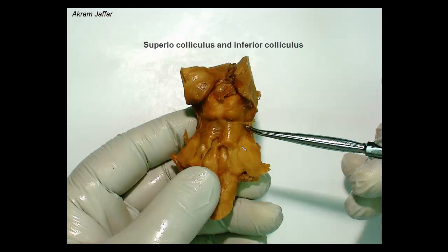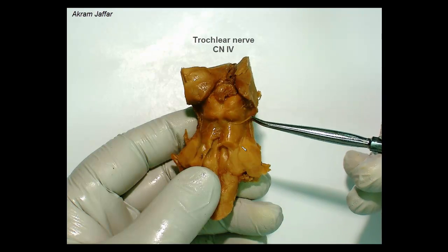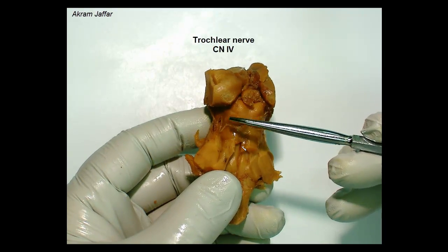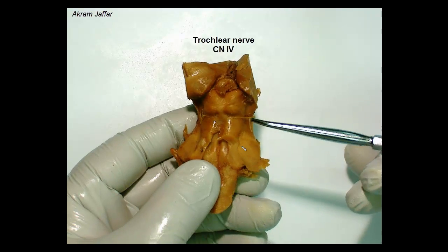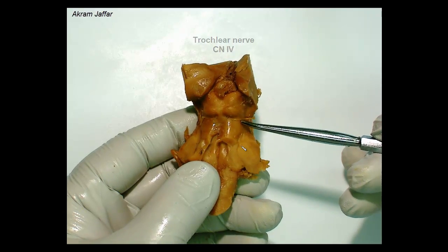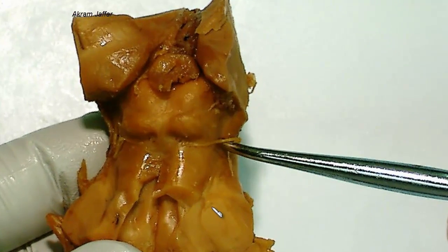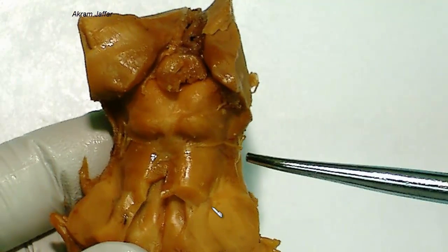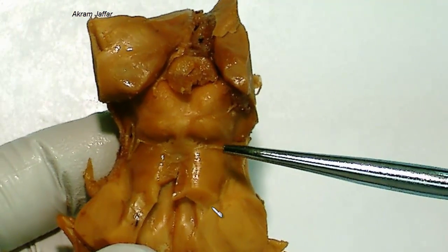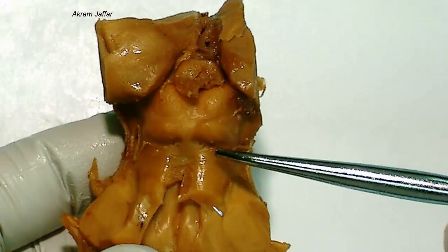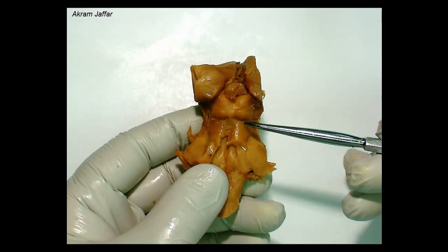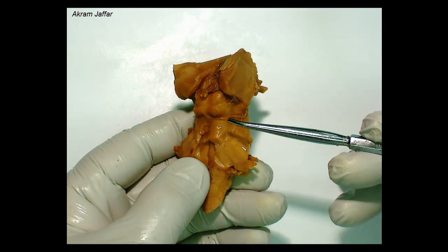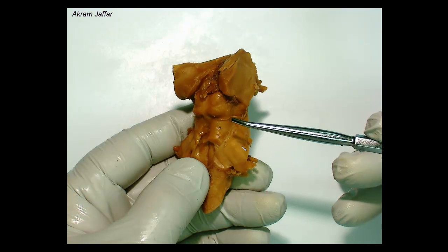Below the inferior colliculus, the trochlear nerve — a very thin and tiny nerve — supplies a single muscle in the extraocular muscles of the eyeball. The trochlear nerve, supplying the superior oblique muscle, arises from the midbrain below the inferior colliculus, but posteriorly. This is the only cranial nerve that is attached to the posterior part of the brain.